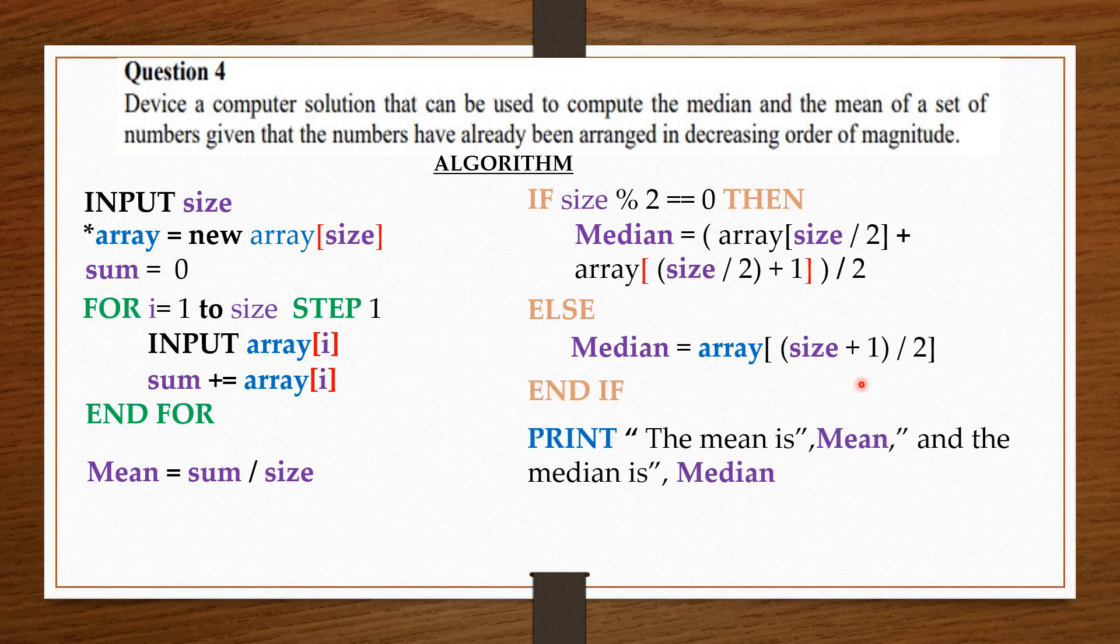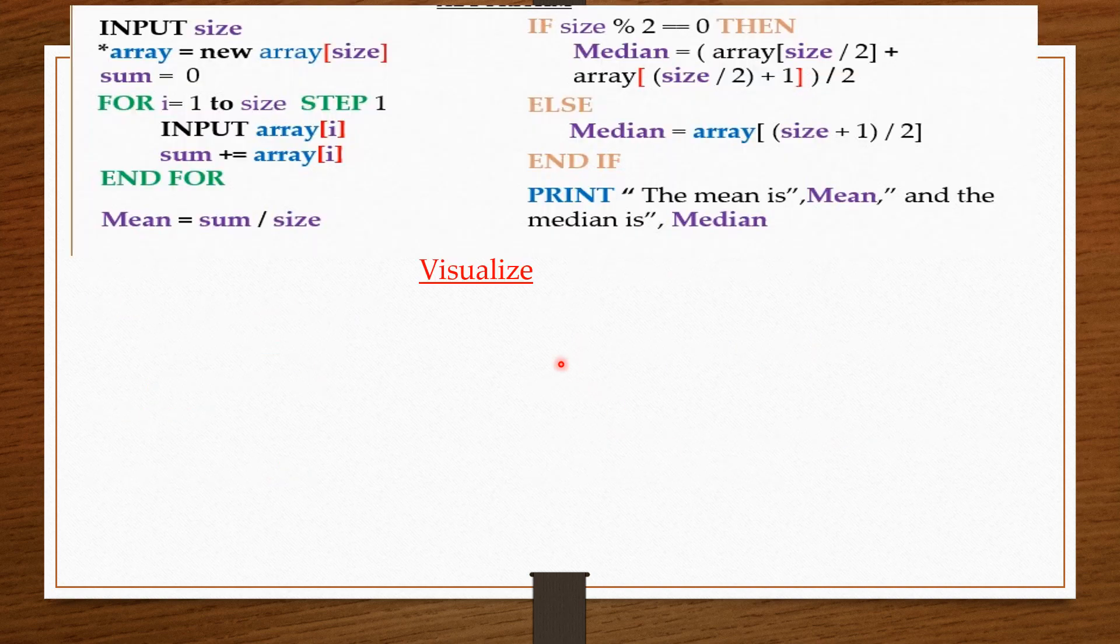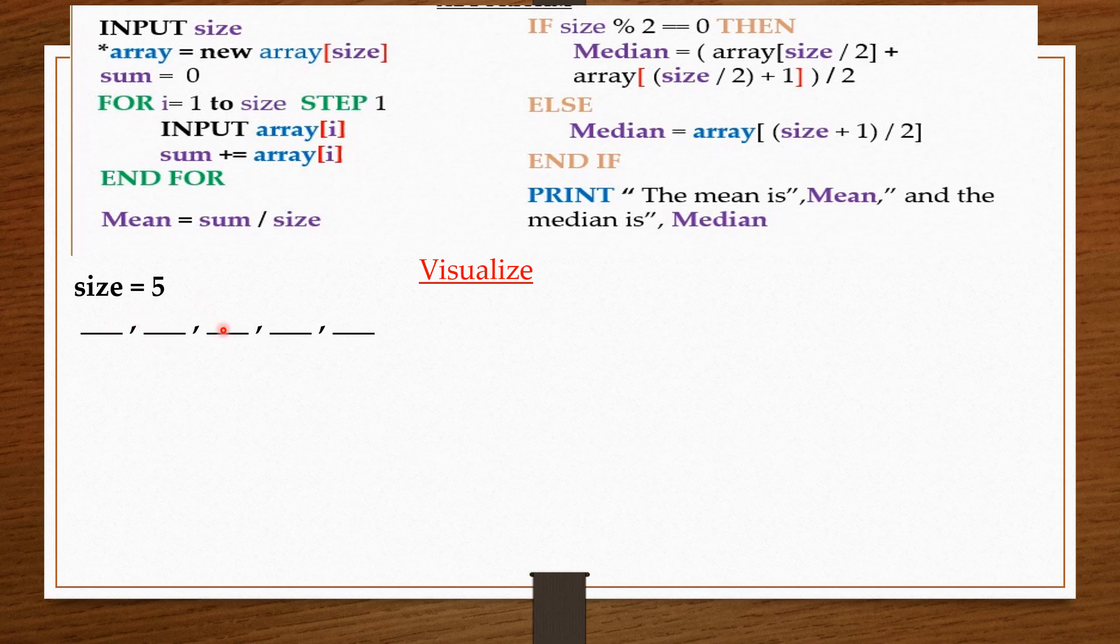To get a better picture of what we are doing, let's visualize what we just did. Take the size to be 5. Next, we create 5 memory spaces in an array. Sum is equal to 0. Now, each time the loop runs, we ask the user to fill the memory spaces in the array with numbers. From 1 to the size, which is 5.